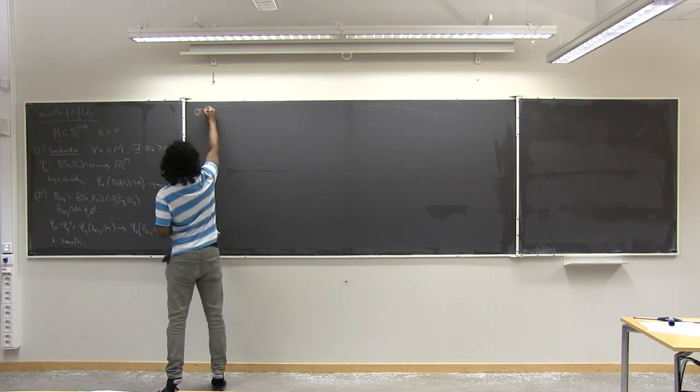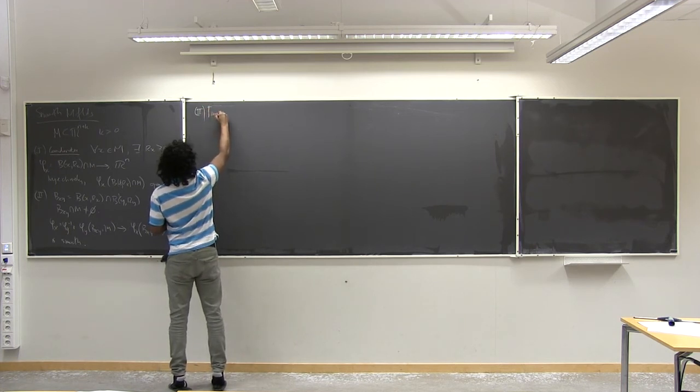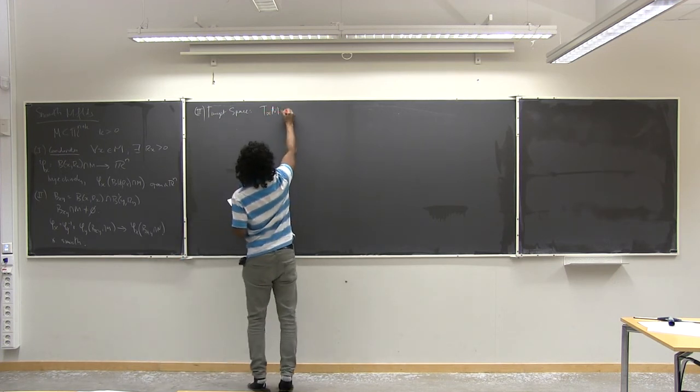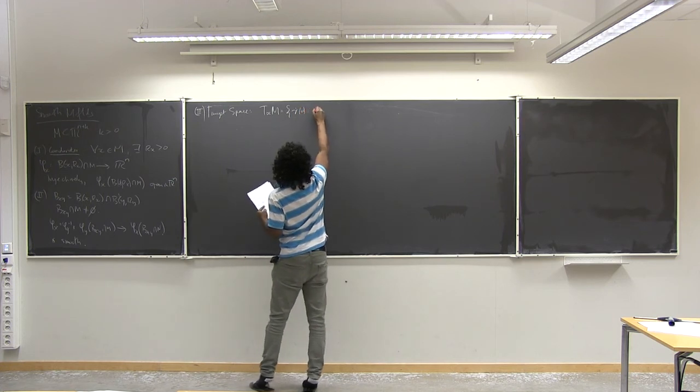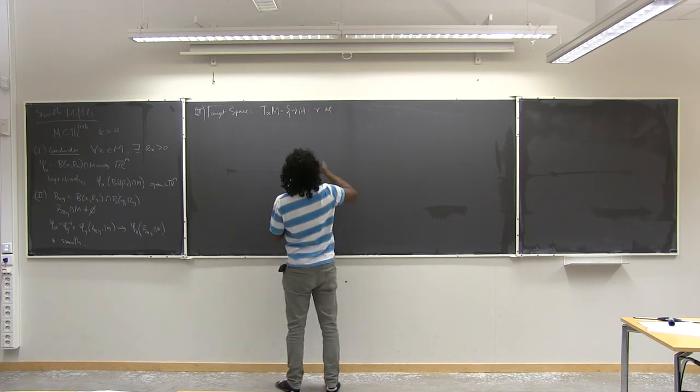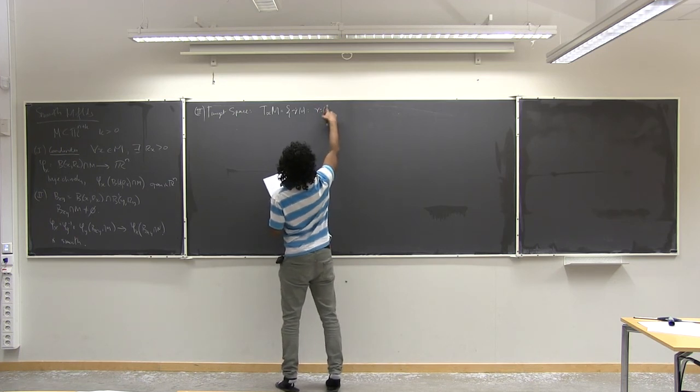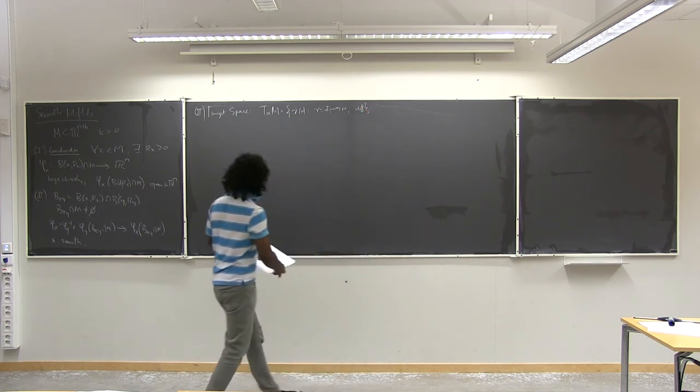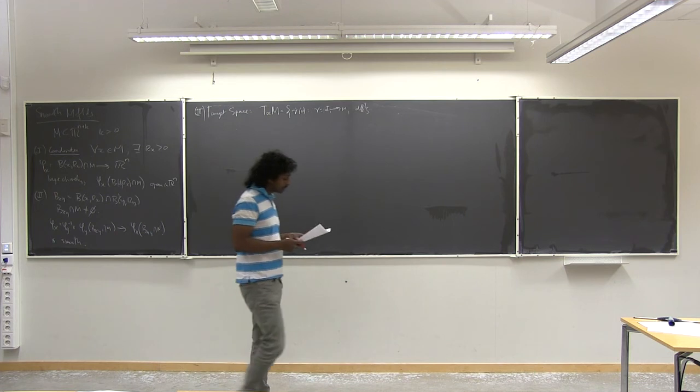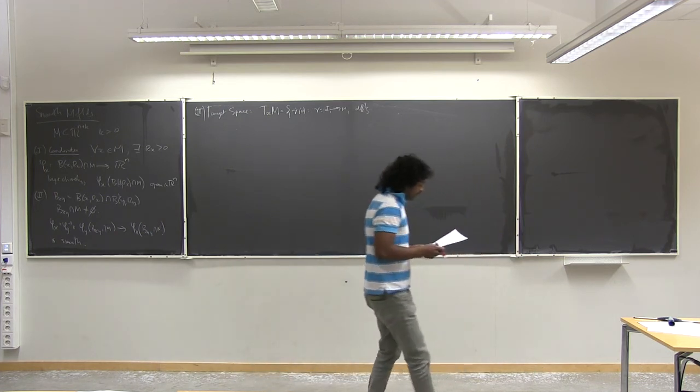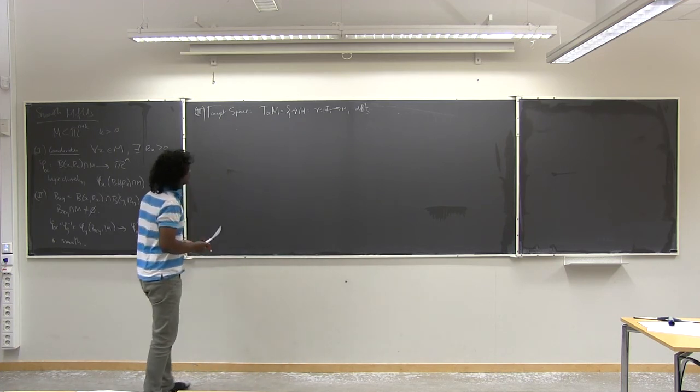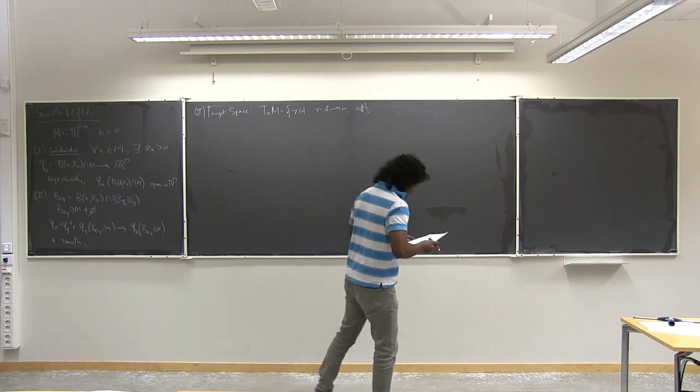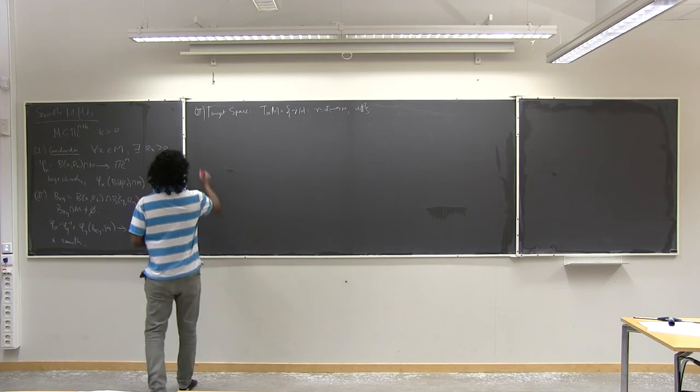So, I can define, at each x, I can define a tangent space. So, gamma is going to go from some interval into M, and it's going to be differentiable. So, you can see that if I put M equal to R^n, or R^2, to pick your favourite space, you can see that the tangent space is going to be generated by all the derivatives of curves going through that point. So, I'll leave that as an exercise for you to verify this.